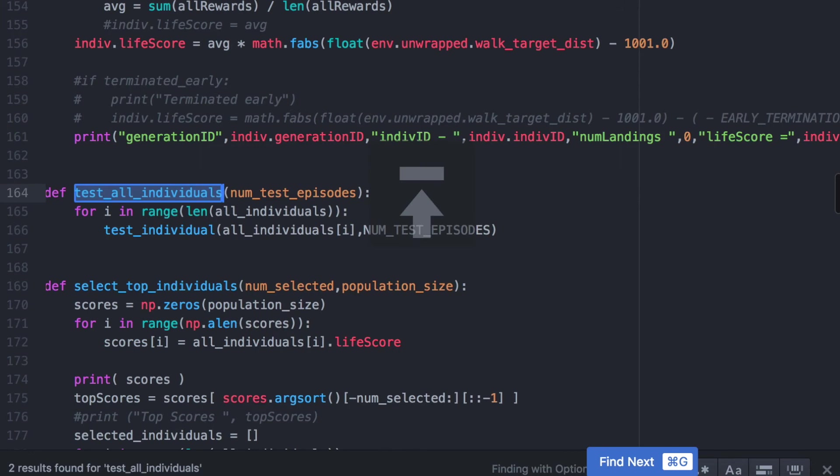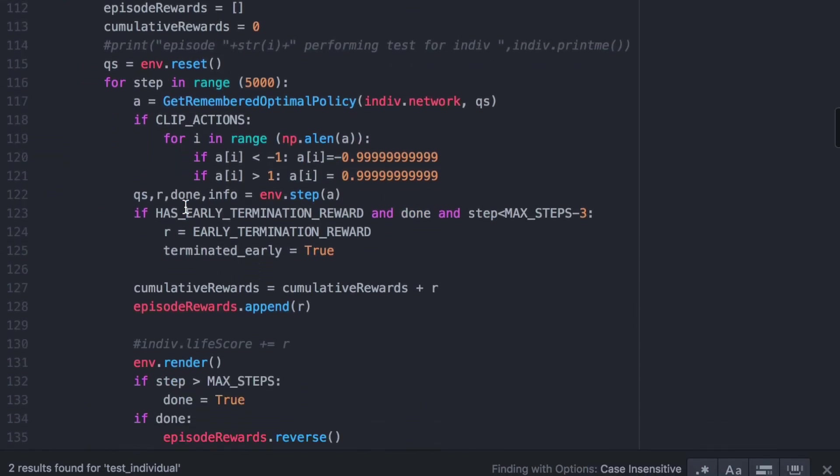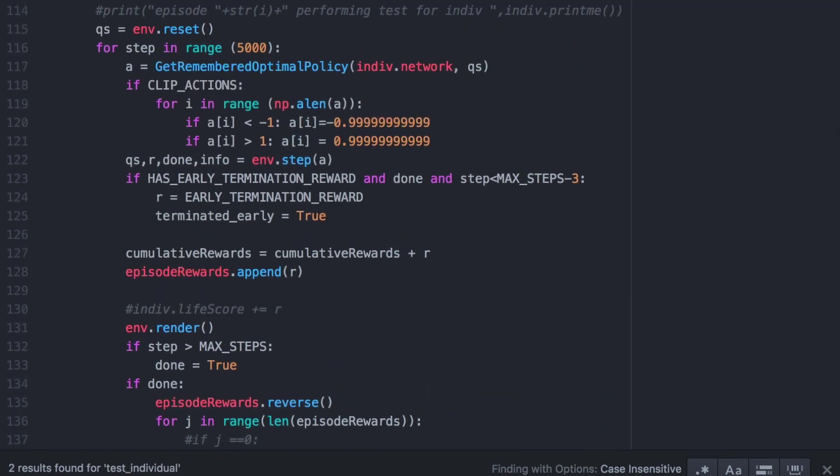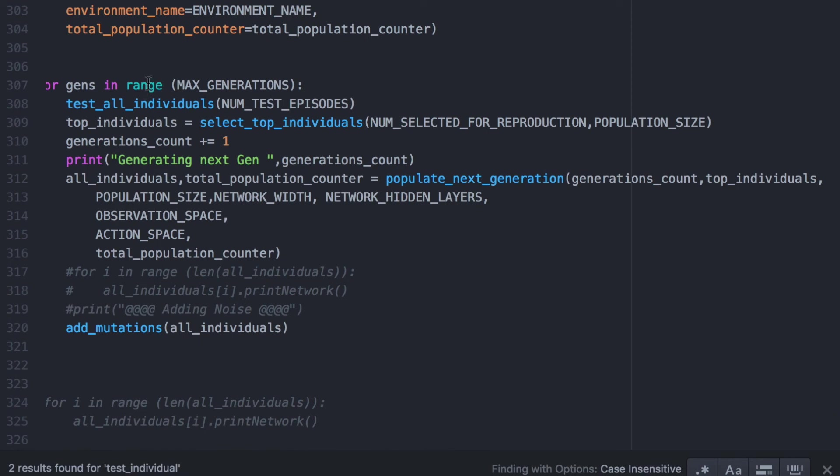For each generation, we will do the following: We will test all individuals within our environment. In our case, our environment is an OpenAI environment. The testing will ensure that each individual has a fitness score. Each individual's performance is determined by its features genes—in our case, the features are the individual weights of the network. We will select the best individuals from this generation and keep them in the top individuals list. We will then populate the next generation by mixing the features of the best individuals which we had stored in top individuals.